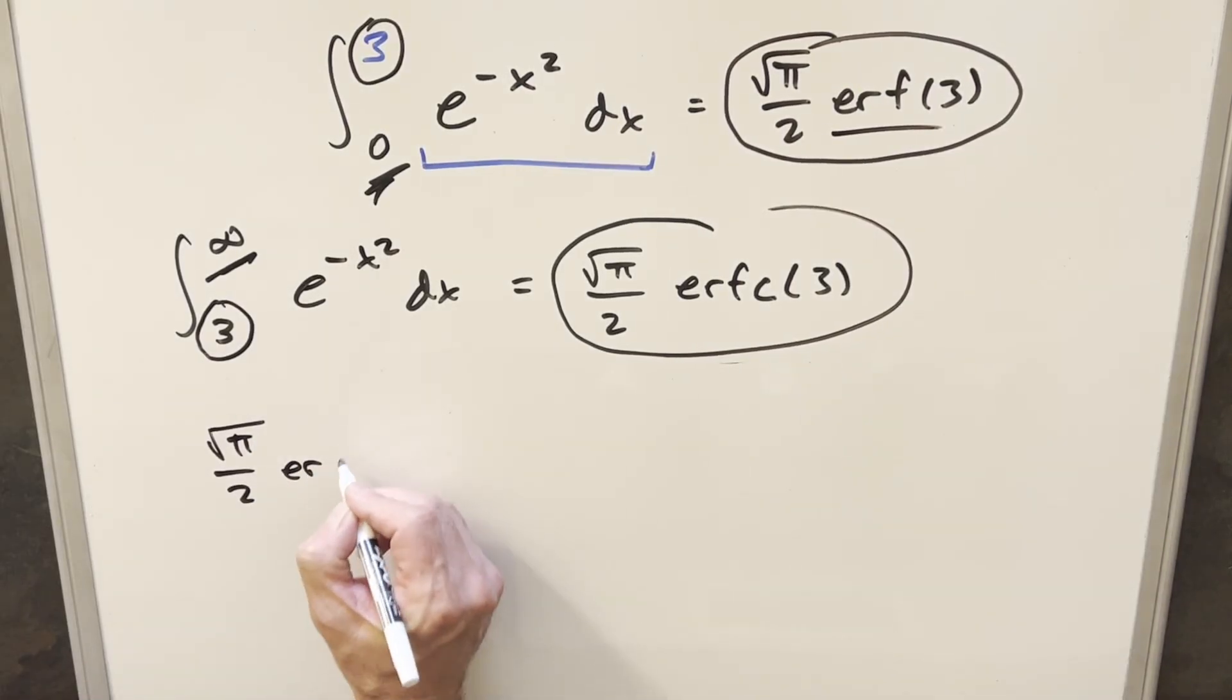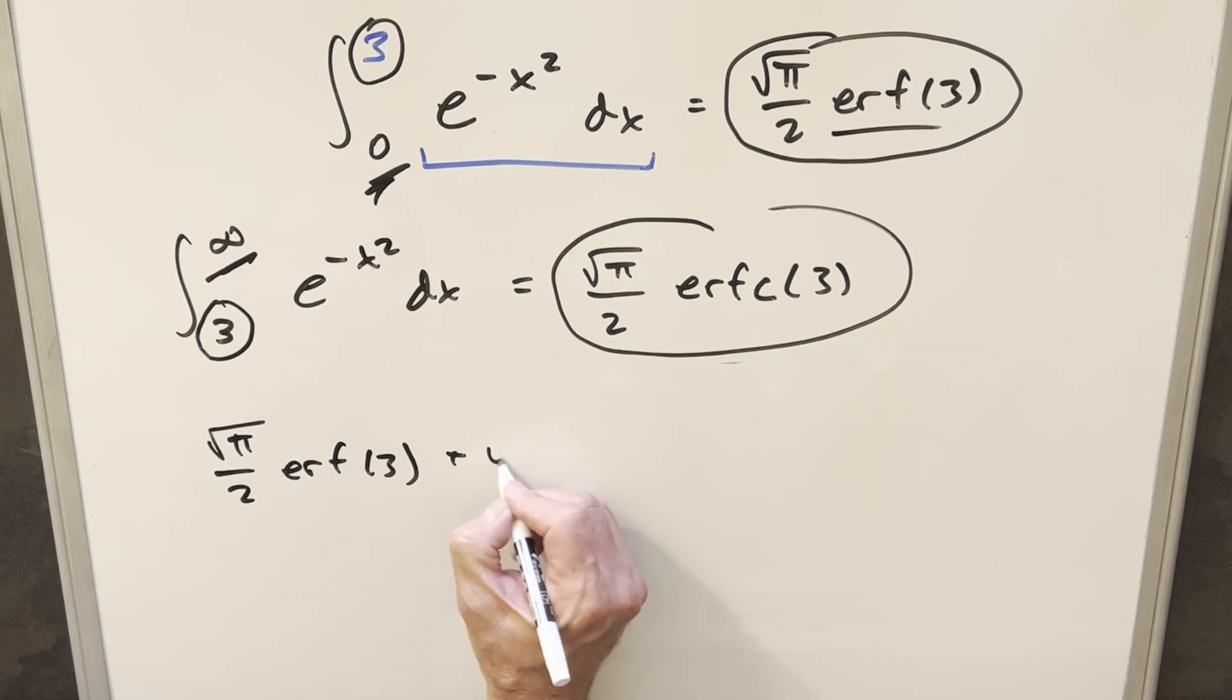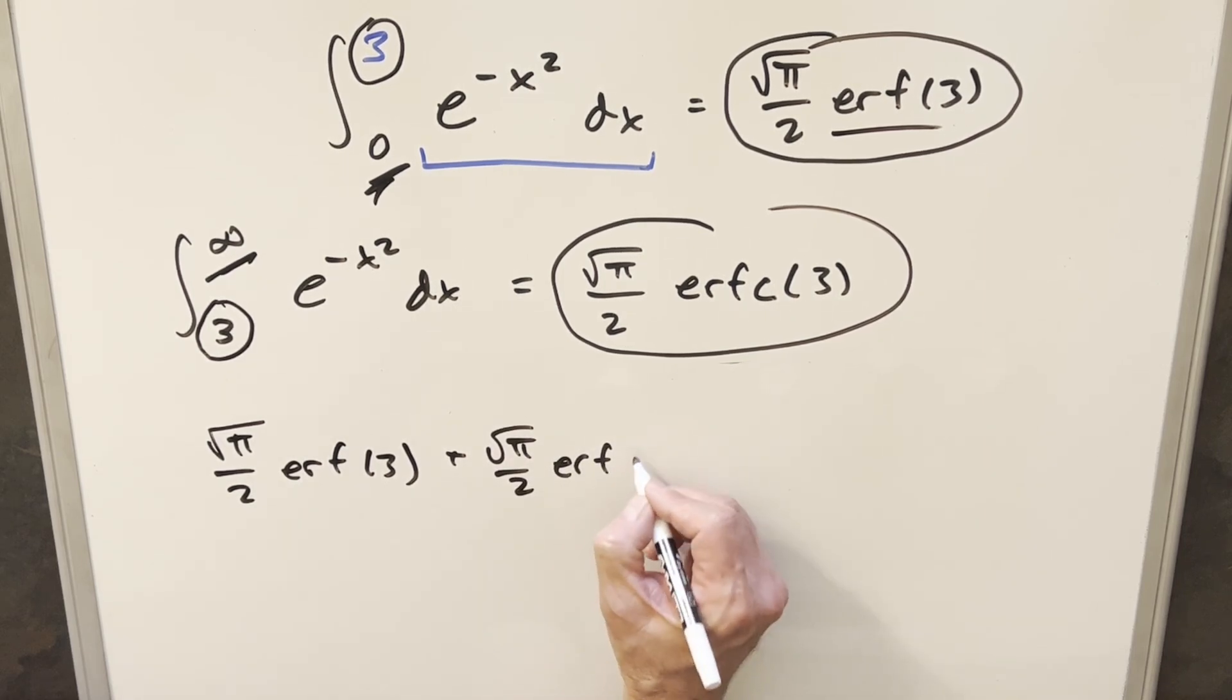So we'll write this out really quick, square root of pi over 2, error function at 3 plus square root of pi over 2 error, complementary error function at 3.